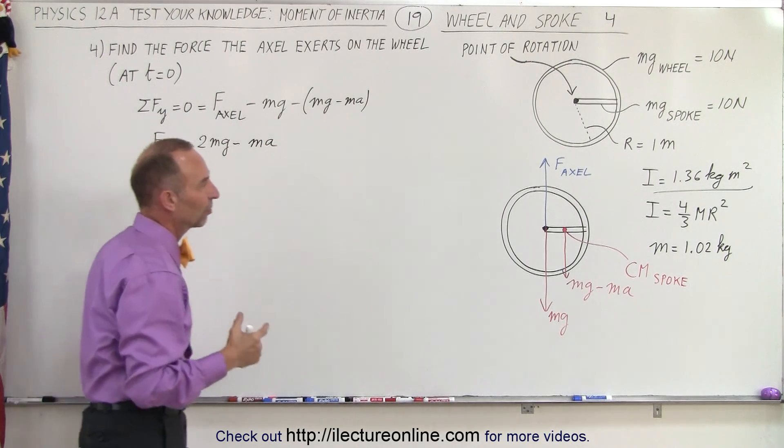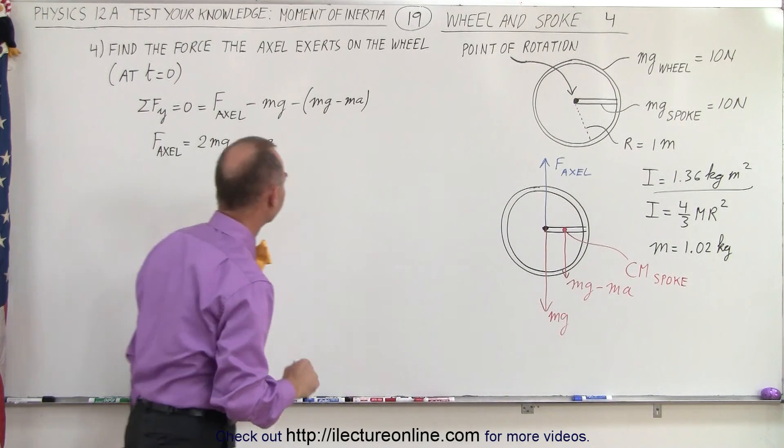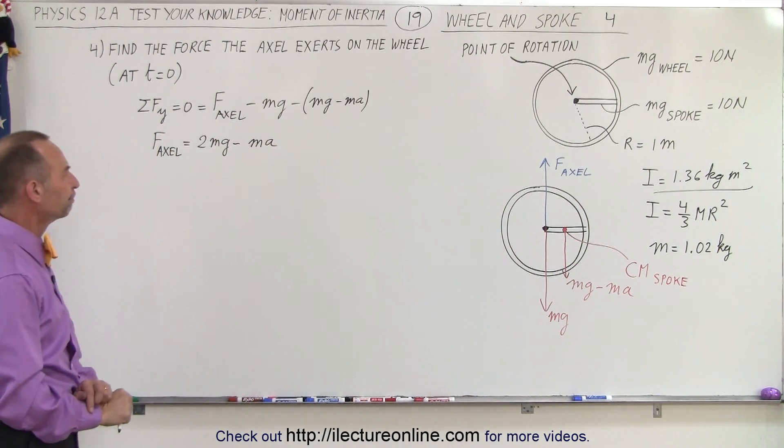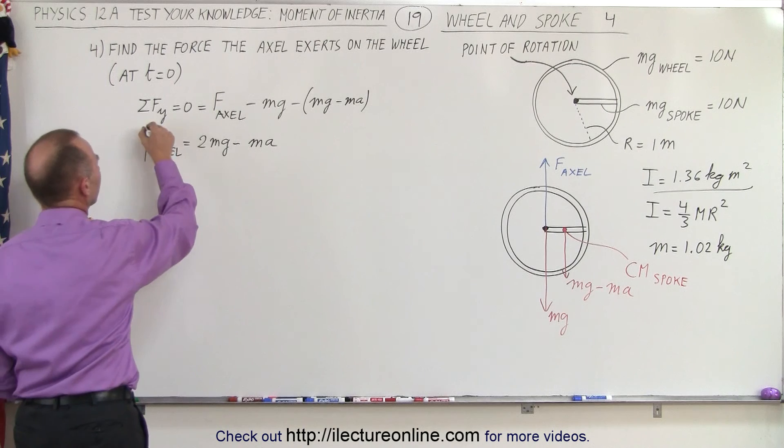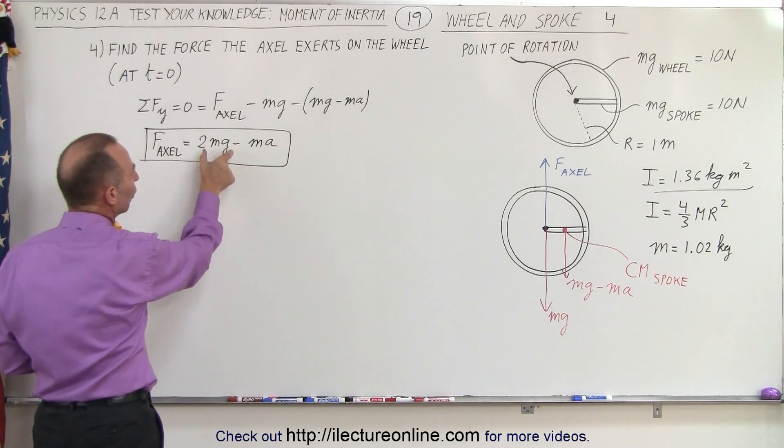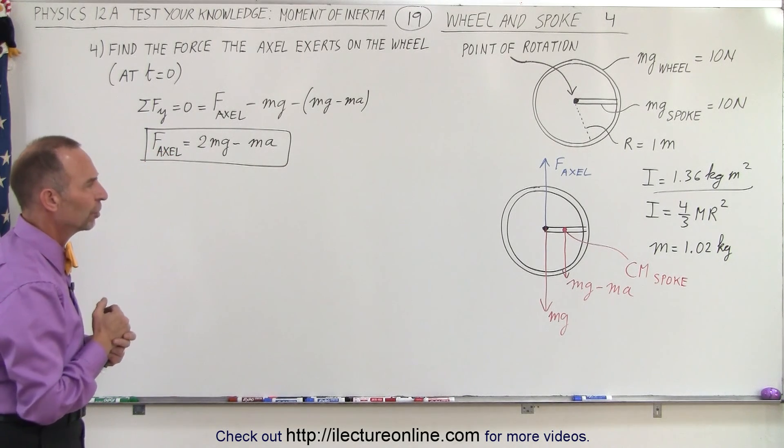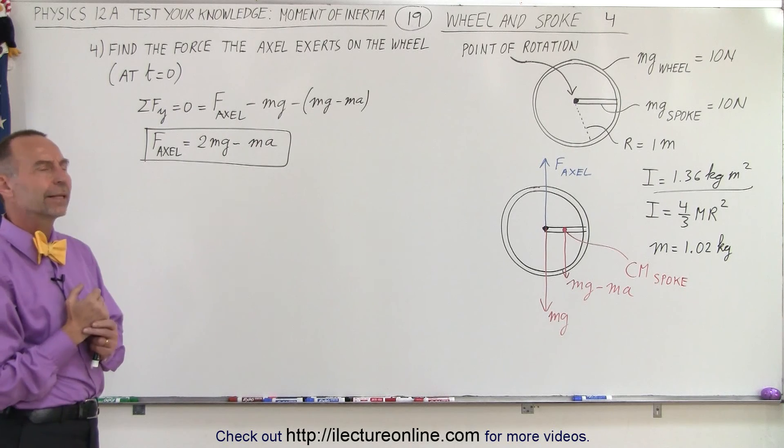Remember that the mass of the spoke or the rim is going to be equal to 1.02 kilograms. Now, let's go ahead and take this and box that in. So, to figure this out, we do know mg already. Each mg is 10 newtons, but we don't know the acceleration. So how do we calculate acceleration?